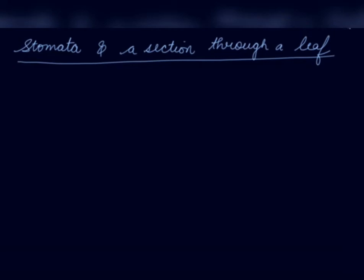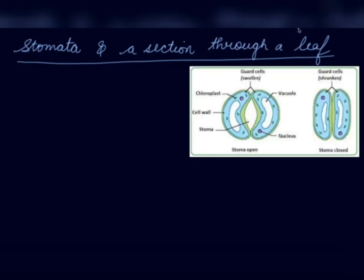Let's see the stomata. This is the diagram of stomata — it is the opening through which the carbon dioxide from the air is taken in. These pores in the leaves are called stomata, and they are surrounded by guard cells. This part is the open stomata through which air is taken in. This is the closed stomata when the air is not taken inside.